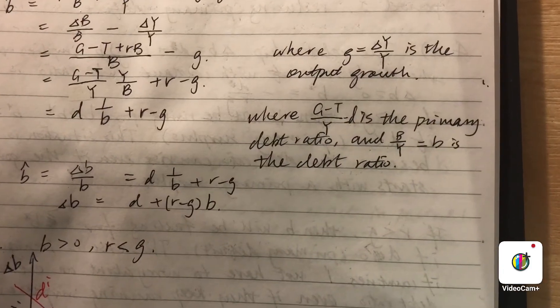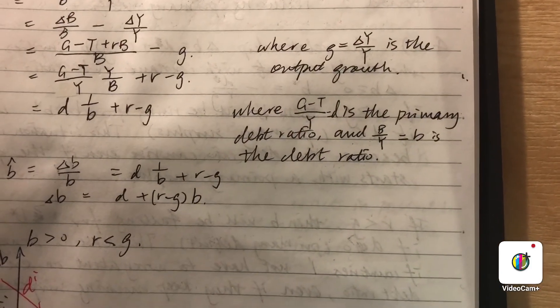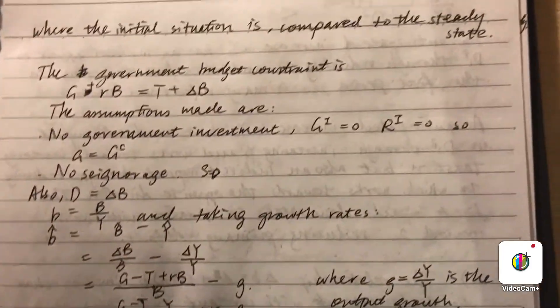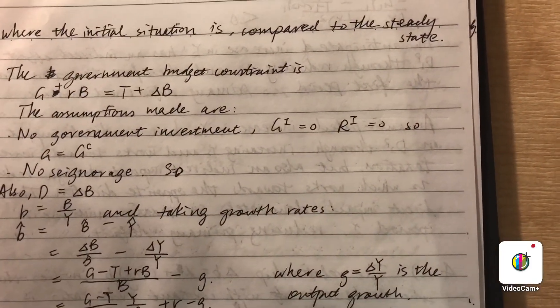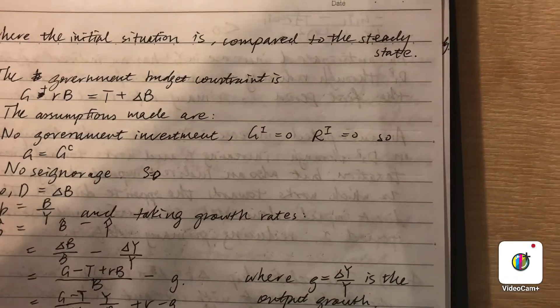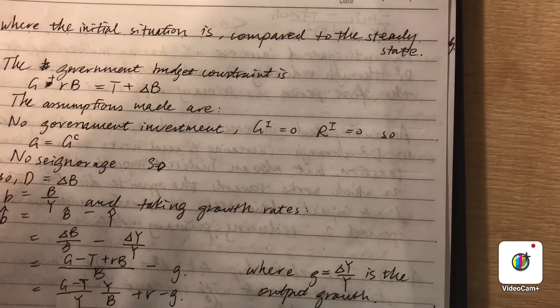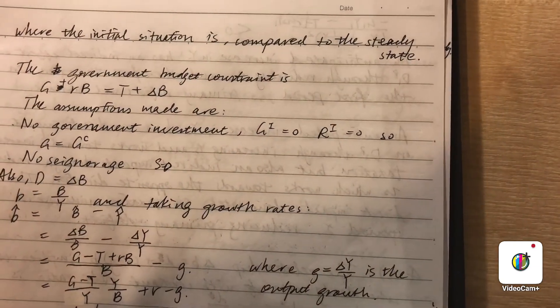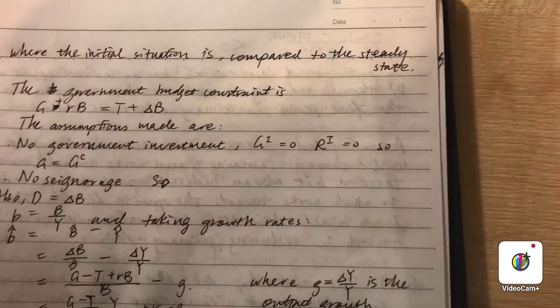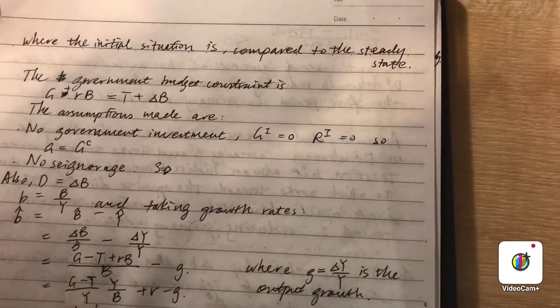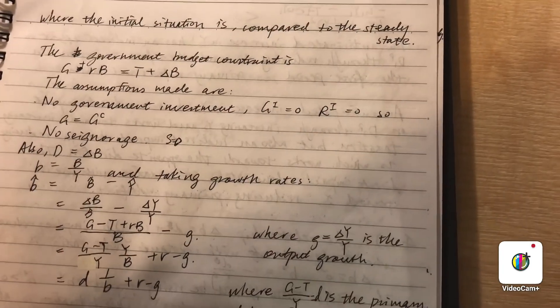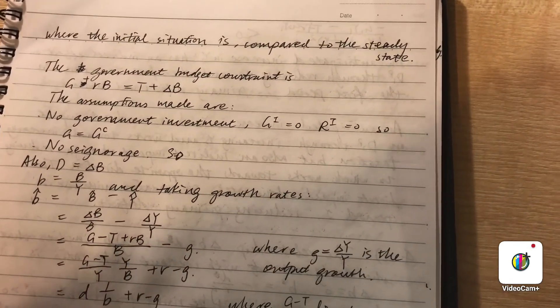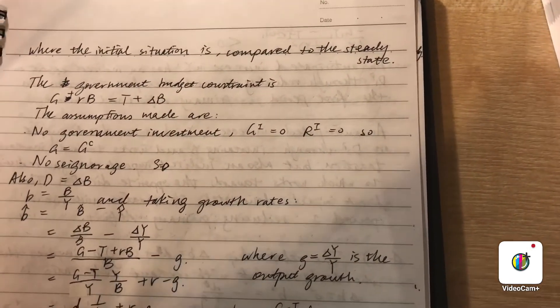D is the primary budget deficit. So look at this equation here. D is G plus RB, so it is this Delta B minus... sorry, so D is G minus T. Yeah, it is the debt that the government has to pay back minus the interest payment.